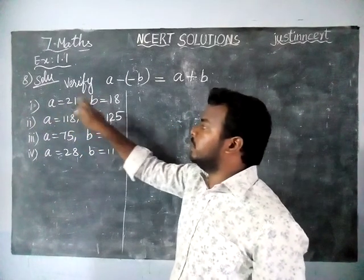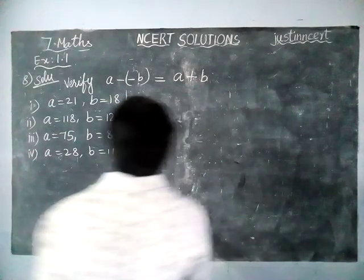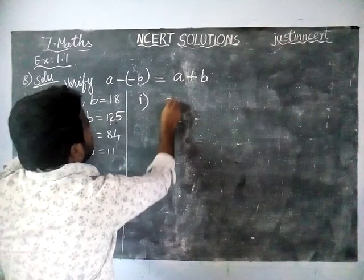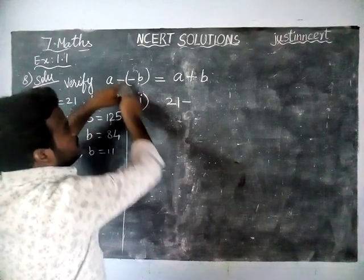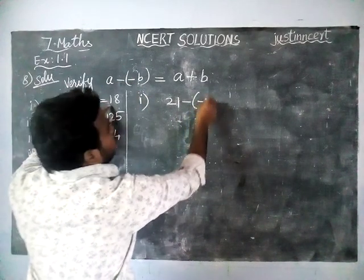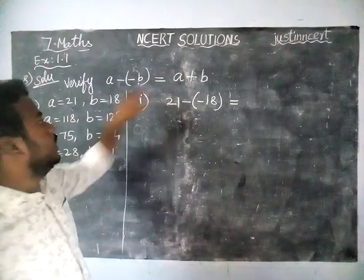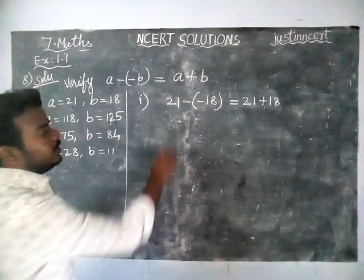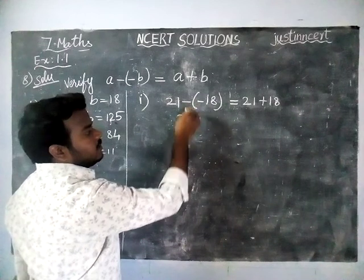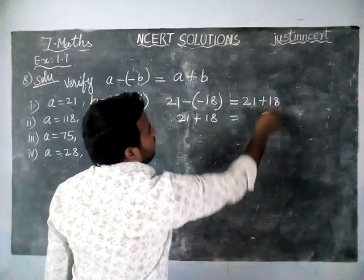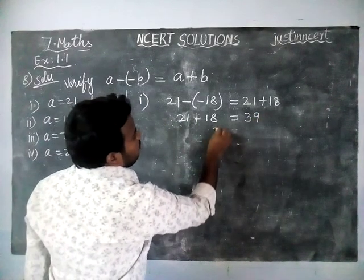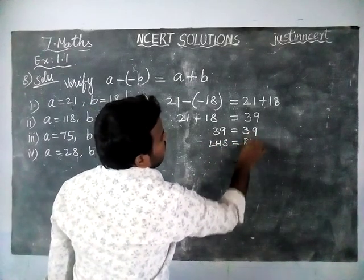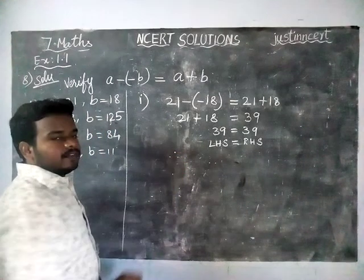In the first option, A value is equal to 21 and B value is equal to 18. We are going to substitute in this formula. So we substitute: 21 minus (minus 18) is equal to 21 plus 18. The minus minus will become plus, so 21 plus 18 is equal to 39. Left hand side is equal to right hand side, therefore it is verified.